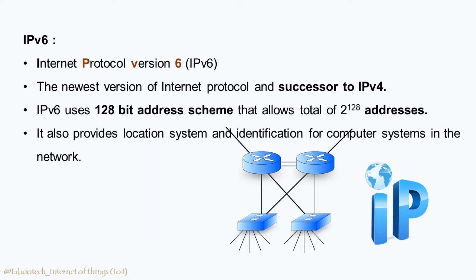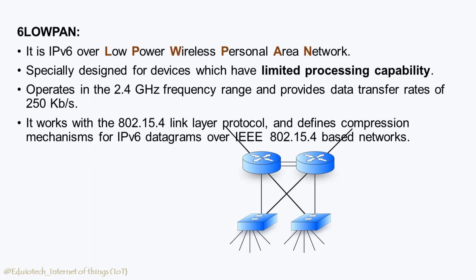IPv6 — Internet Protocol Version 6 — is the newest version of the Internet Protocol and successor to IPv4. It uses a 128-bit address scheme that allows a total of 2 raised to 128 addresses, and provides a location system and identification for computer systems in the network. 6LoWPAN is IPv6 over low-power wireless personal area networks, specially designed for devices with limited processing capability. It operates in the 2.4 GHz frequency range, provides data transfer rates of 250 Kbps, and works with the 802.15.4 link layer protocol, defining compression mechanisms for IPv6 datagrams over IEEE 802.15.4 based networks.